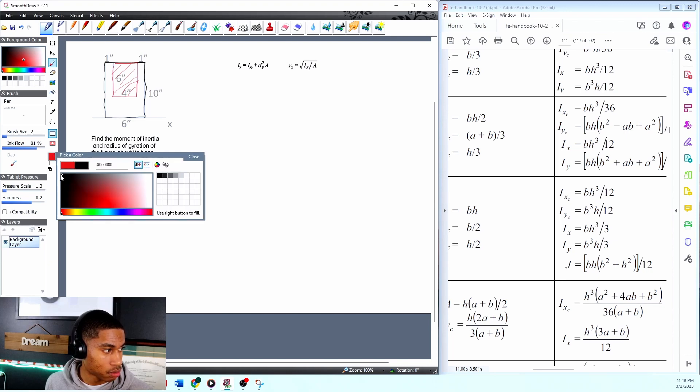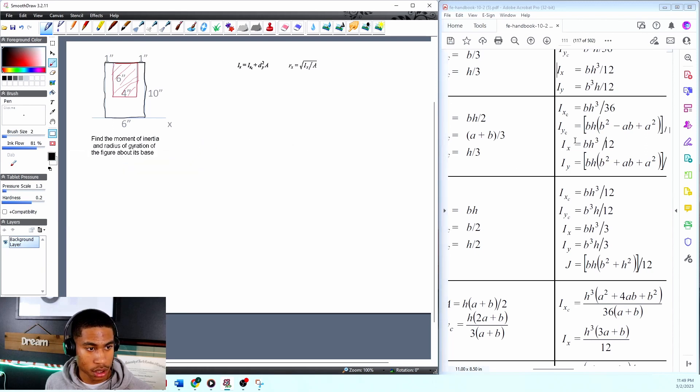What is the moment of inertia for my big box? Well, that is just ix, and that equals base times height cubed divided by three. Which equals, what's my base? Six. What's my height? Ten. And we'll do that divided by three.